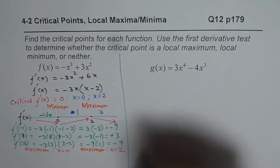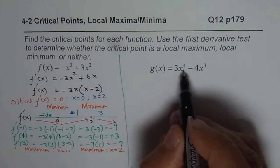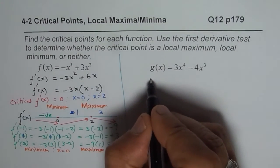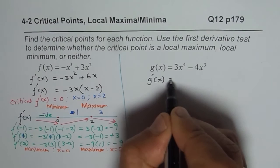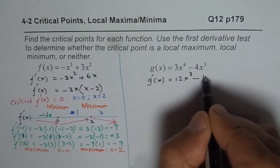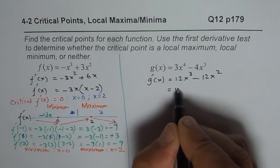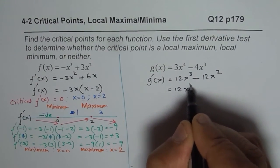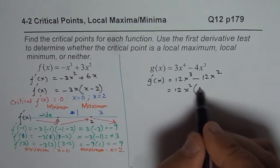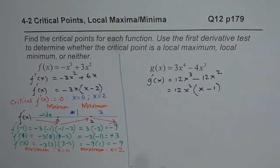Now for another example: the function is g of x equals 3x to the power of 4 minus 4x cubed. Following the same steps, the derivative is 12x cubed minus 12x squared. Factoring, we take 12x squared as a common factor and get 12x squared times (x minus 1).